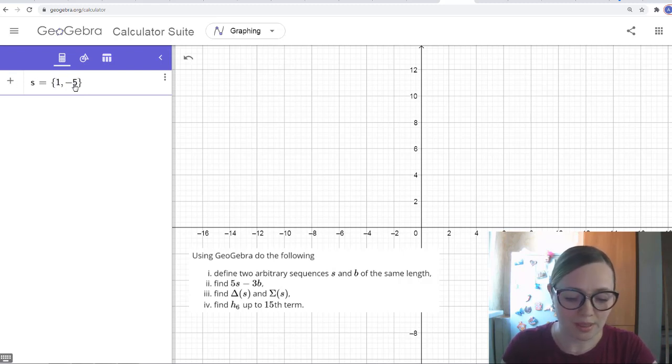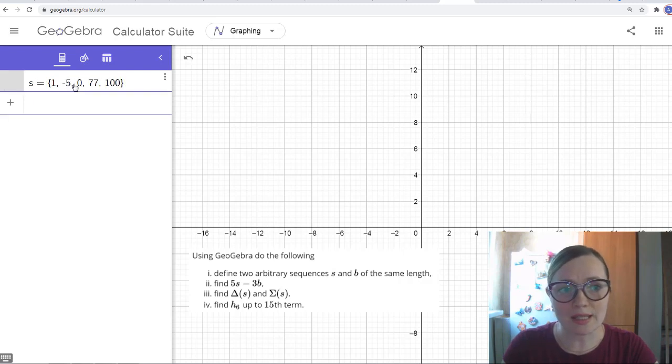1, minus 5, 0, 77, 100, for example. And press Enter. At the end, we get a sequence with these elements.